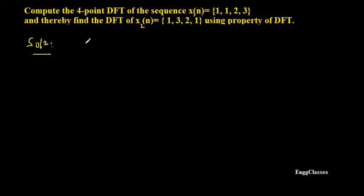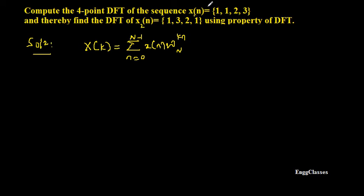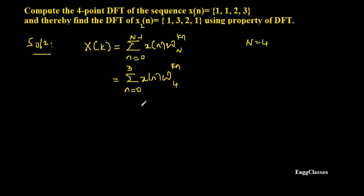X of k, which is the DFT, is equal to the summation from n equal to 0 to N minus 1 of x of n times W_N to the power k times n. This is the formula to find the DFT of any sequence. Since it is a four point DFT and x of n is also of length 4, capital N must be 4. So I will use the summation from n equal to 0 to 3, with W_4 to the power k times n.